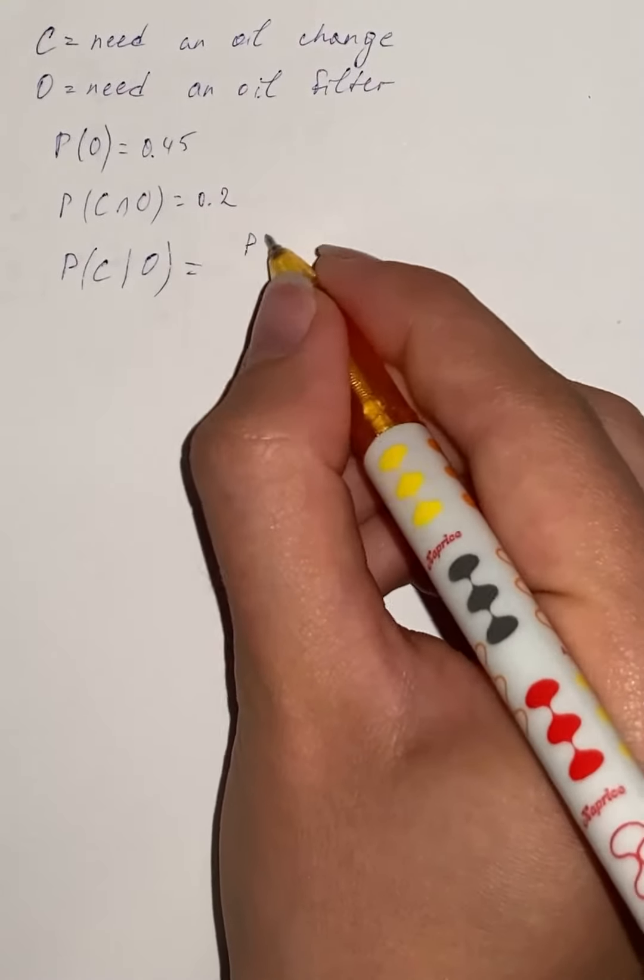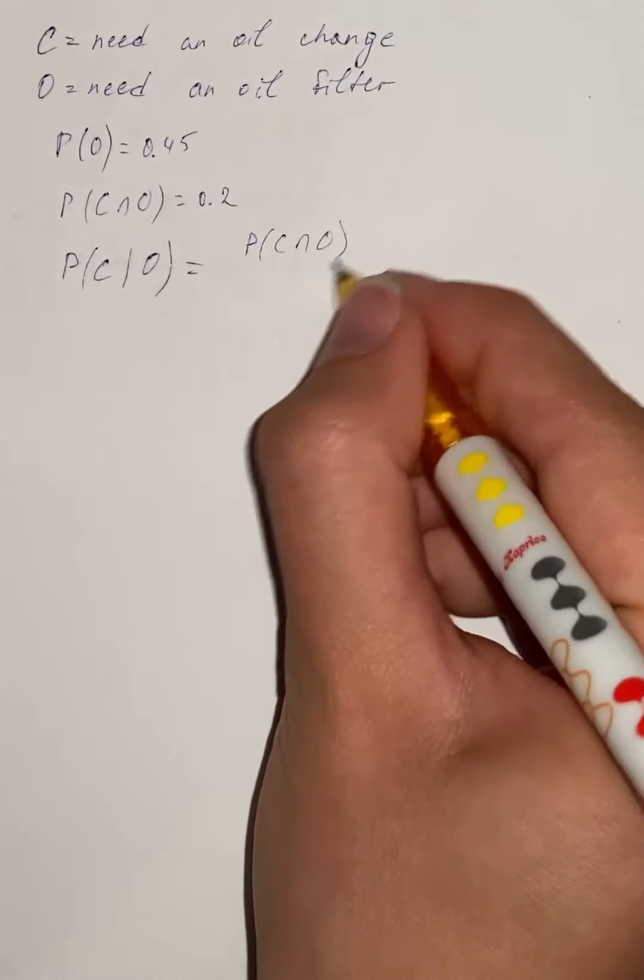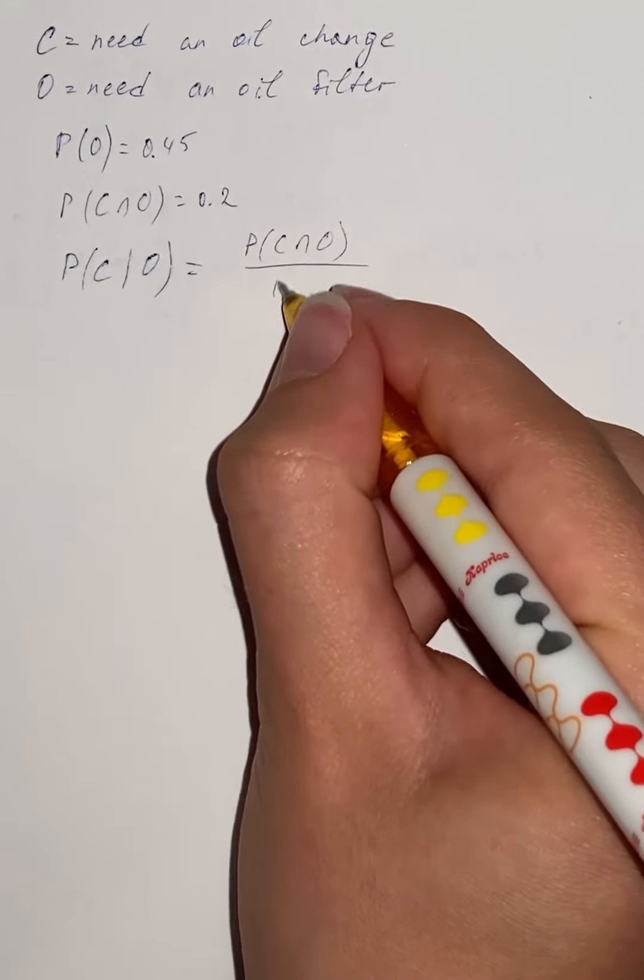So we're going to divide the probability of both of them being needed by the probability of O.